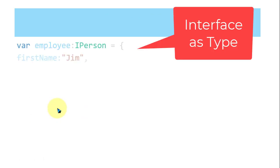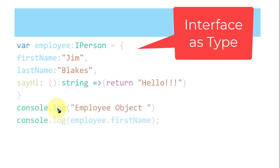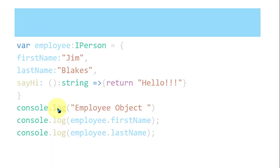In the second example, 'employee' is also of type IPerson. firstName is 'Gene', then lastName is assigned. These are the values for the fields of the interface. Then the body for the method sayHi returns 'hello'. Then console.log prints employee.firstName, employee.lastName, and calling sayHi on the employee object. This is the second example of interface and objects.